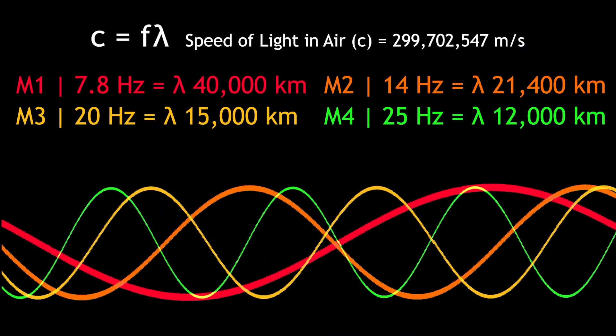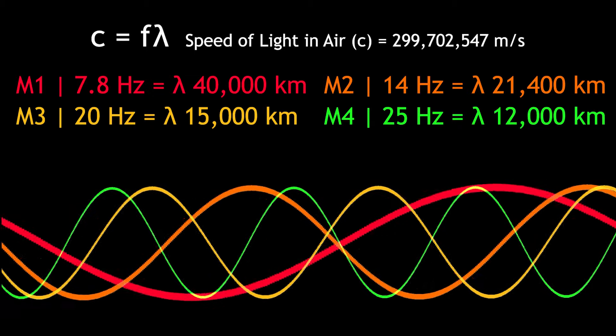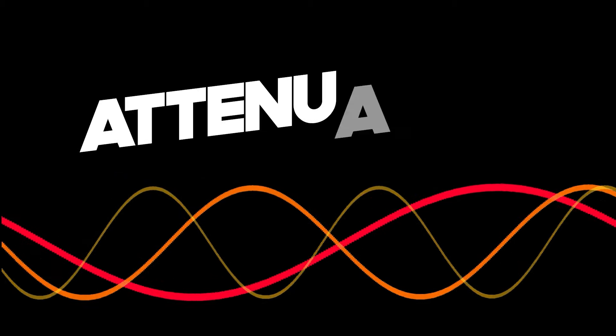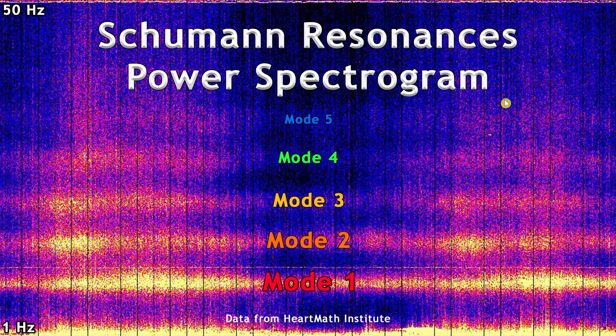Because the Schumann Resonances have such massive wavelengths they dissipate very slowly. The faster a wave oscillates the quicker its energy dissipates into the background, a process known as attenuation. The higher frequency modes lose energy faster and for this reason the 7.8 hertz foundational mode is typically the most powerful and the best resonator.